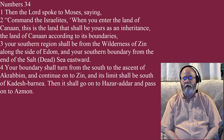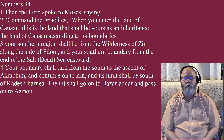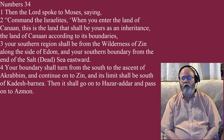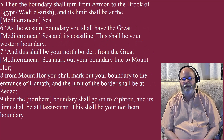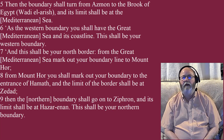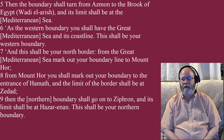Your boundary shall turn from the south to the ascent of Akrabim and continue on to Zen. And its limit shall be south of Kadesh Barnea, then it shall go on to Hazar Adar and pass to Asmon. Then the boundary shall turn from Asmon to the brook of Egypt, Wad el-Arish, and its limit shall be at the Mediterranean Sea.